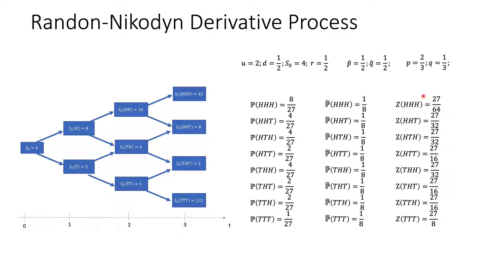to calculate the Randon-Nikodym derivative, all we need to do is calculate the probability at each of these final nodes of the tree. And then we calculate the probability under the risk-neutral world and the probability under the real world. And then all we need to do is take the ratio for each node at the end of the tree. Then from here we get what we call the Randon-Nikodym derivative Z.